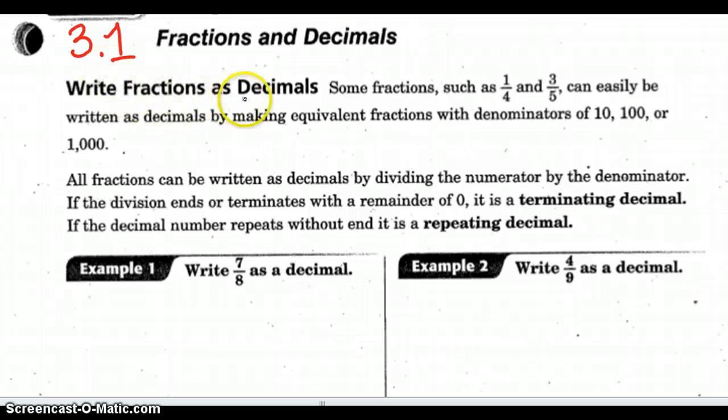To write a fraction as a decimal, you simply have to convert the fraction. If it's a number like 1 fourth or 3 fifths, where we can easily make the denominator a 10, 100, or 1000, for example, 1 fourth is the same thing as 25 over 100. So the decimal equivalent is 0.25.